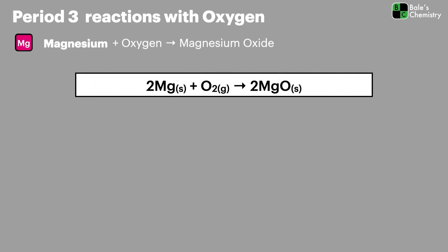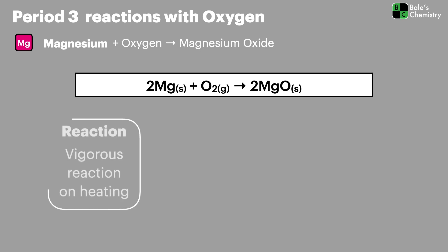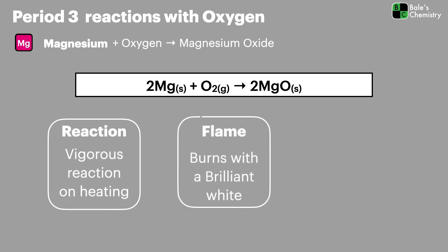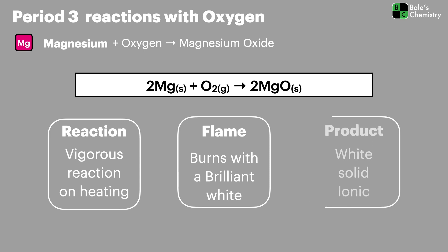Magnesium also reacts with oxygen to form magnesium oxide. Again this reaction is really vigorous — it burns with a brilliant white flame, which is why you hold a little blue filter in front of your eyes in the lab so you don't damage them. Magnesium oxide is produced as a white ionic solid.